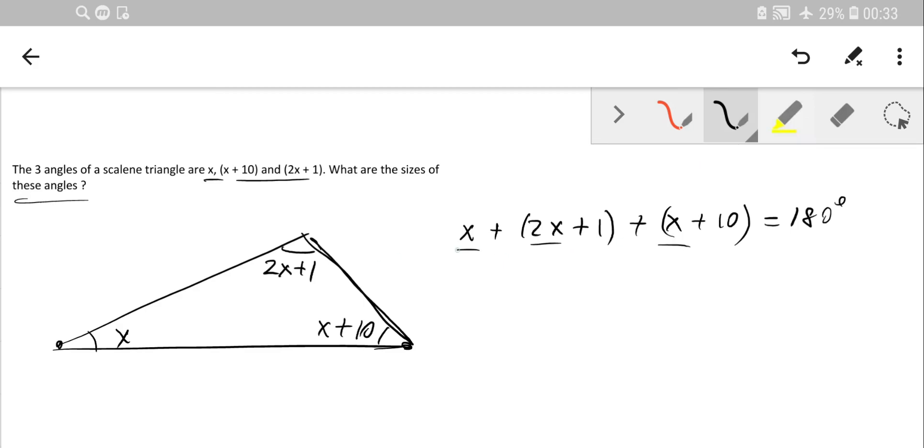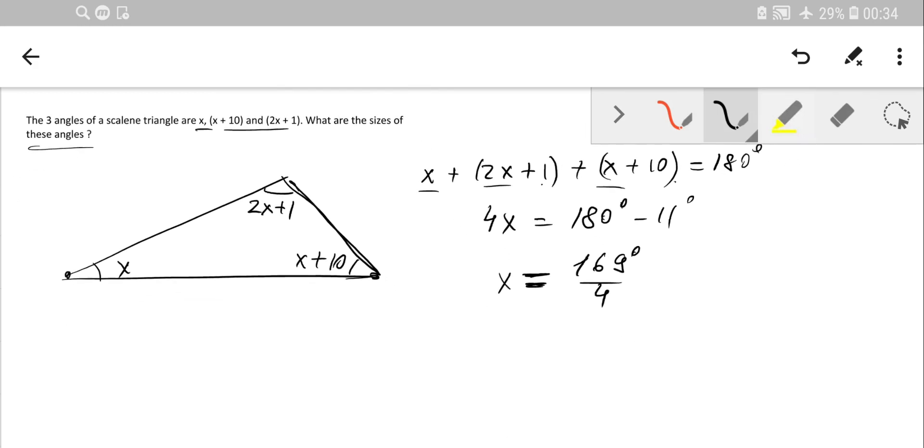We'll get 3X and X is 4X, 1 and 10 is 11. So it's 180 minus 11. We'll get X is approximately, or maybe just precisely, 180 minus 11 is 169 over 4. So that's the precise measure for angle X.